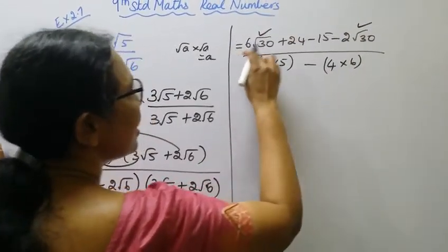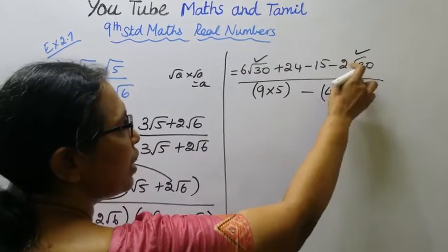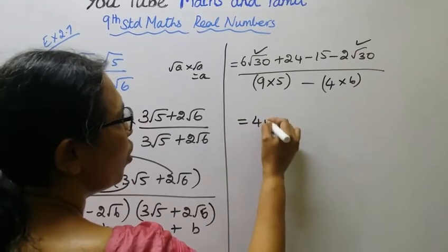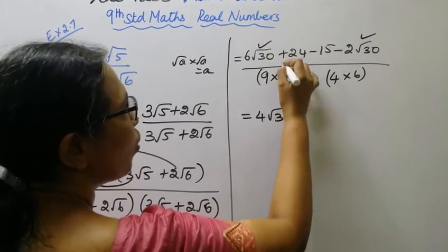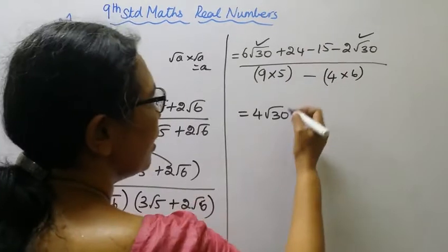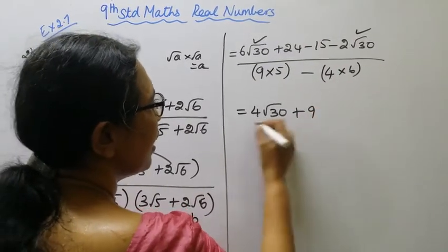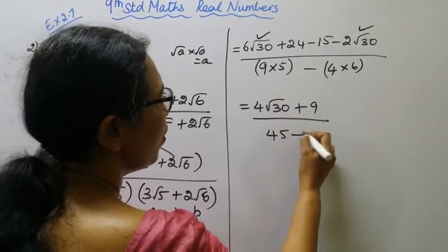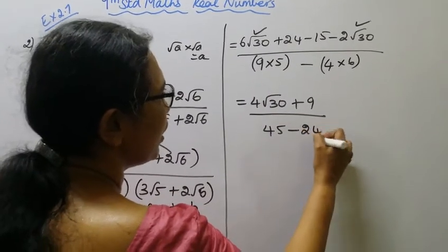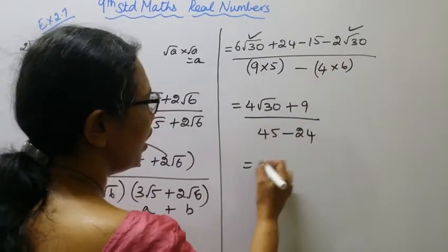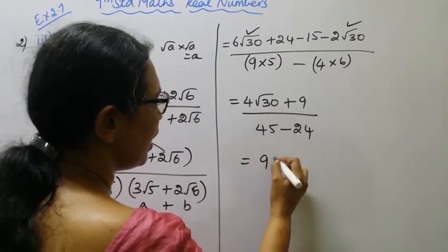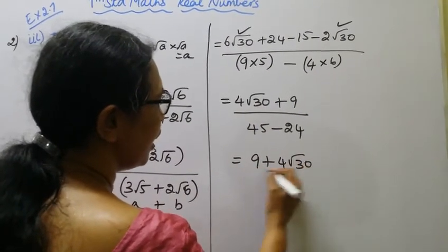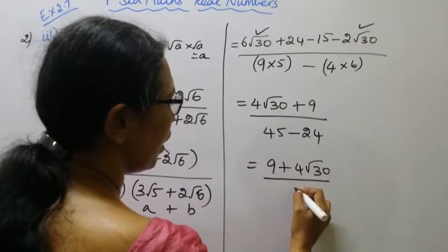These are like terms. 6 root 30 minus 2 root 30 gives 4 root 30. Then 24 minus 15 gives 9. Plus 9. So the numerator simplifies to 9 plus 4 root 30. Divided by 21. This gives the final answer: 9 plus 4 root 30, divided by 21.